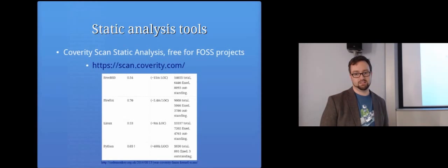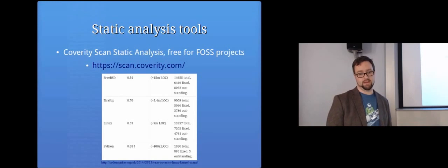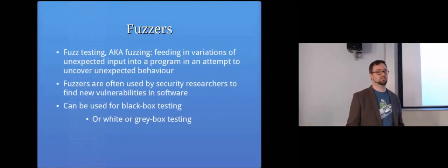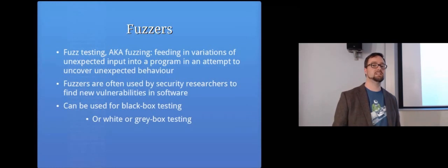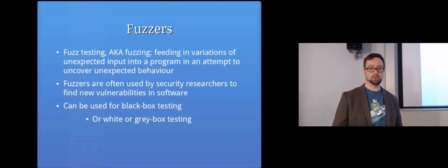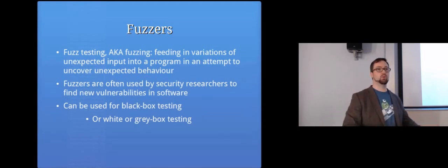The Linux kernel has about nine million lines of code, and interestingly FreeBSD has even more. That gives you a sense of the scale static analysis can handle. Now, what about when you don't have access to the source code? That's where fuzzing comes in. You can use fuzz testing to feed variations of input into a program — creating unexpected input to uncover unexpected behavior and software vulnerabilities that might be lurking in the code.